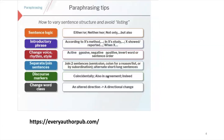How to vary your sentence structure is important — avoid the use of lists, use sentence logic, introductory phrases, and change your voice, rhythm, and style of writing. Separate and join sentences using discourse markers and change the word class. 'Either/or,' 'neither/nor,' and 'not only/but also' are examples of sentence logic that you can draw on to vary your writing.